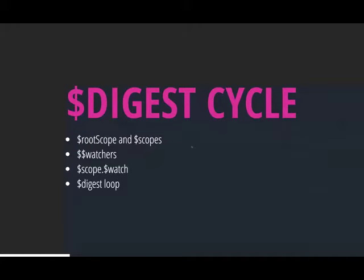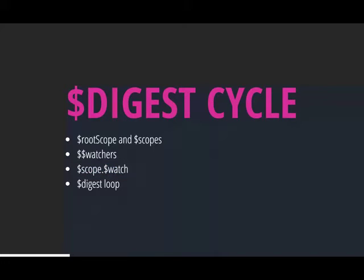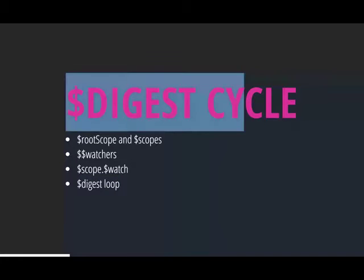The main components of the digest cycle are: root scope, scopes, and watchers. The $$ prefix indicates a public property on a scope you're not really meant to use — it's subject to change. Watchers are how Angular does all its dirty checking inside the digest loop. We've also got scope.$watch, which can be used well or badly depending on how you use it.